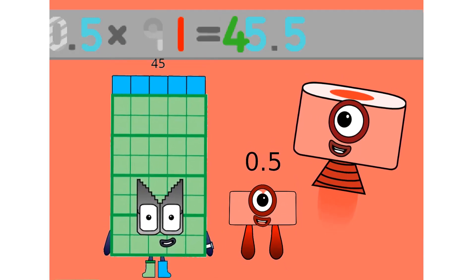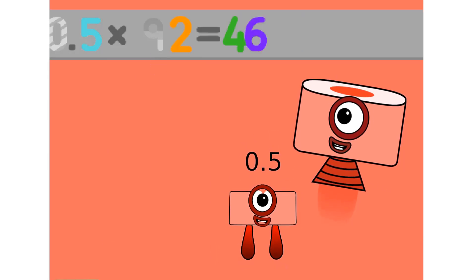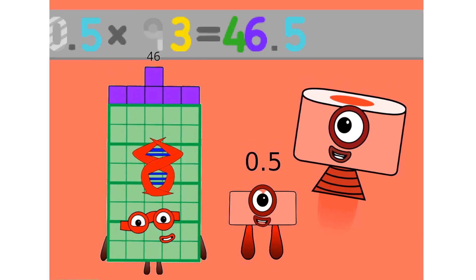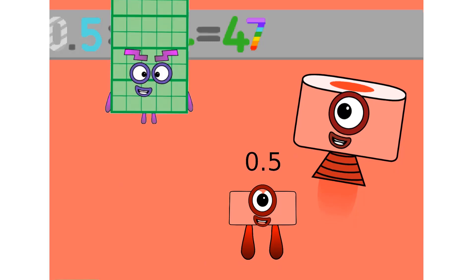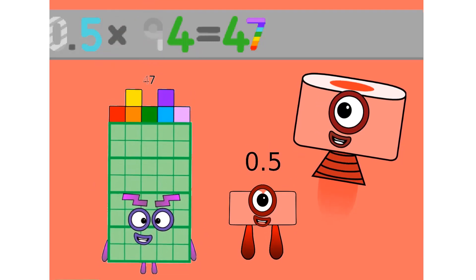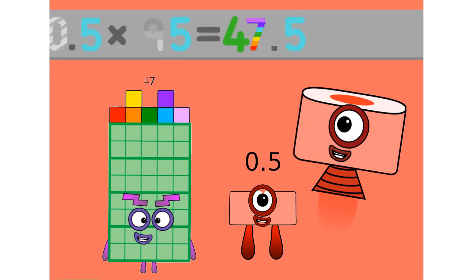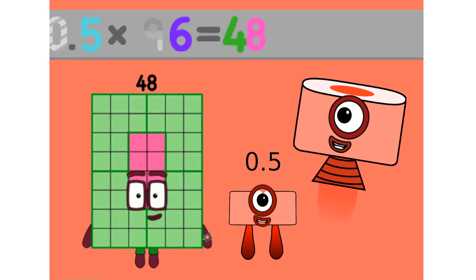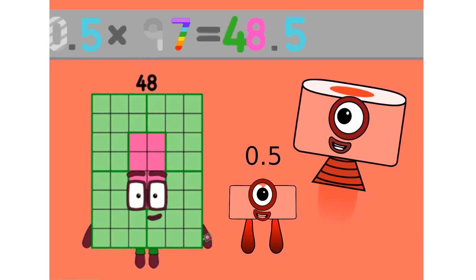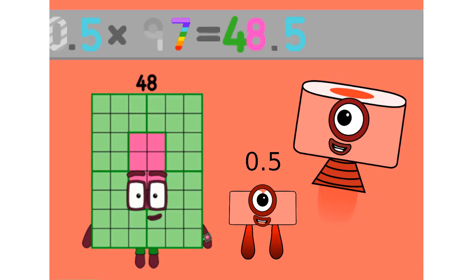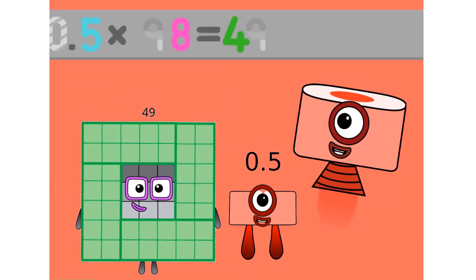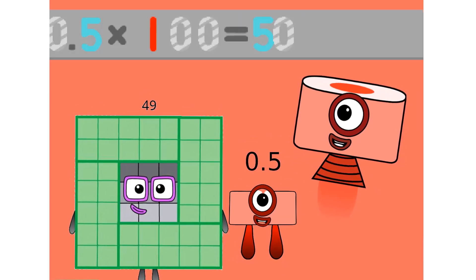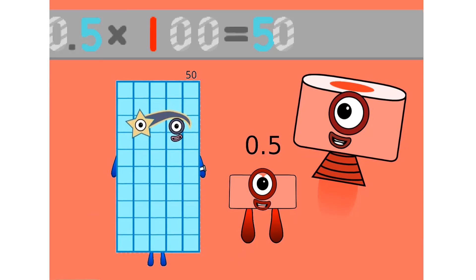0.5 times 91 equals 45.5. 0.5 times 92 equals 46. 0.5 times 93 equals 46.5. 0.5 times 94 equals 47. 0.5 times 95 equals 47.5. 0.5 times 96 equals 48. 0.5 times 97 equals 48.5. 0.5 times 98 equals 49. 0.5 times 99 equals 49.5. 0.5 times 100 equals 50.